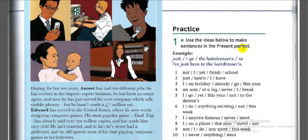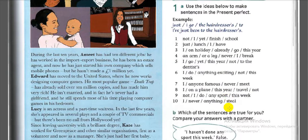Exercise one practice: use the ideas below to make sentences in the present perfect. For example, using the idea 'just / go to the hairdressers': the correct present perfect sentence is 'I've just been to the hairdressers.' Pause and do this exercise.